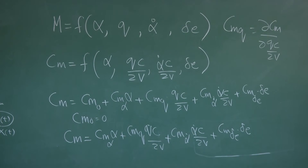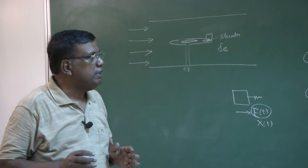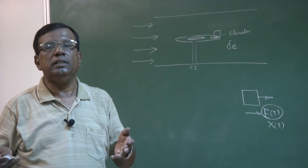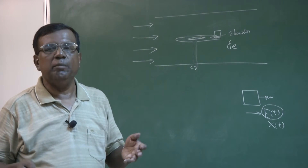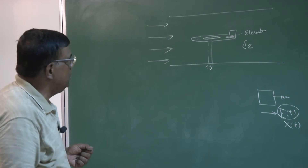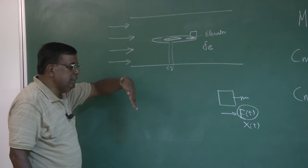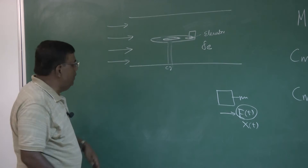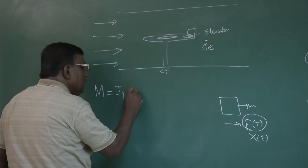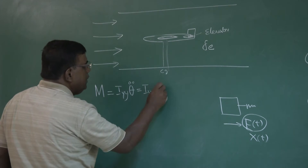When we were doing the mass-spring-damper system, our first step was to write the equation of motion: x_double_dot + (C/m)*x_dot + (k/m)*x = f(t)/m. Here also we have to write the equation of motion, but this is angular motion. So it will be governed by M = I_yy * theta_double_dot, or equivalently I_yy * q_dot.